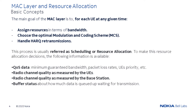To make these resource allocation decisions, the following information is available: Quality of Service or QoS data, such as minimum guaranteed bandwidth, packet loss rates, UE priority, etc. Radio channel quality, as measured by the UE and base station, such as the signal-to-interference ratio, or SINR. Buffer status, reported by the higher layers, indicating how much data is queued up waiting for transmission.